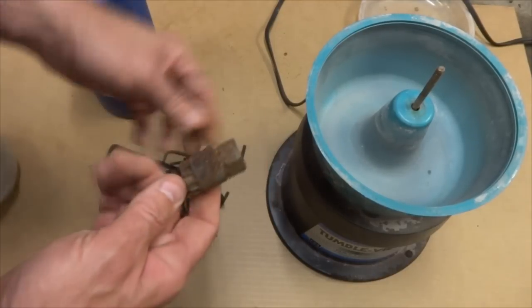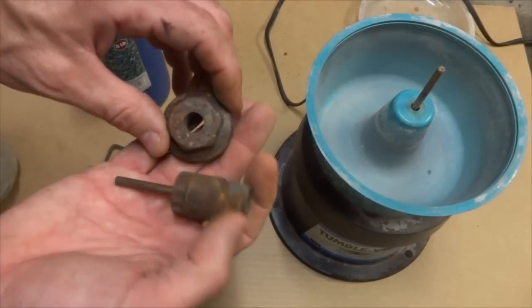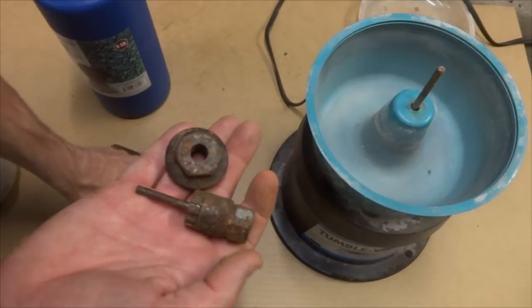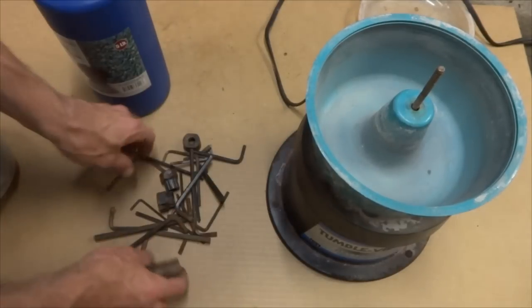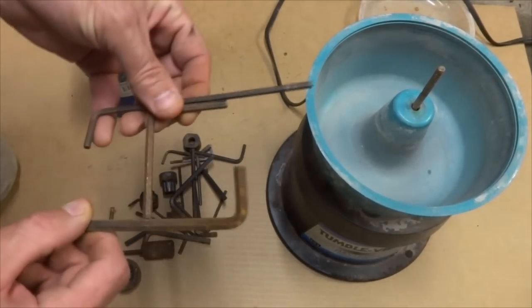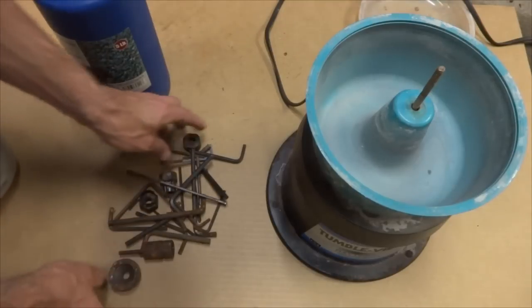Some of the tools had rust on them. Here's some freewheel remover tools and you can see they've got rust on them. There are some Allen wrenches in here and they have rust on them.